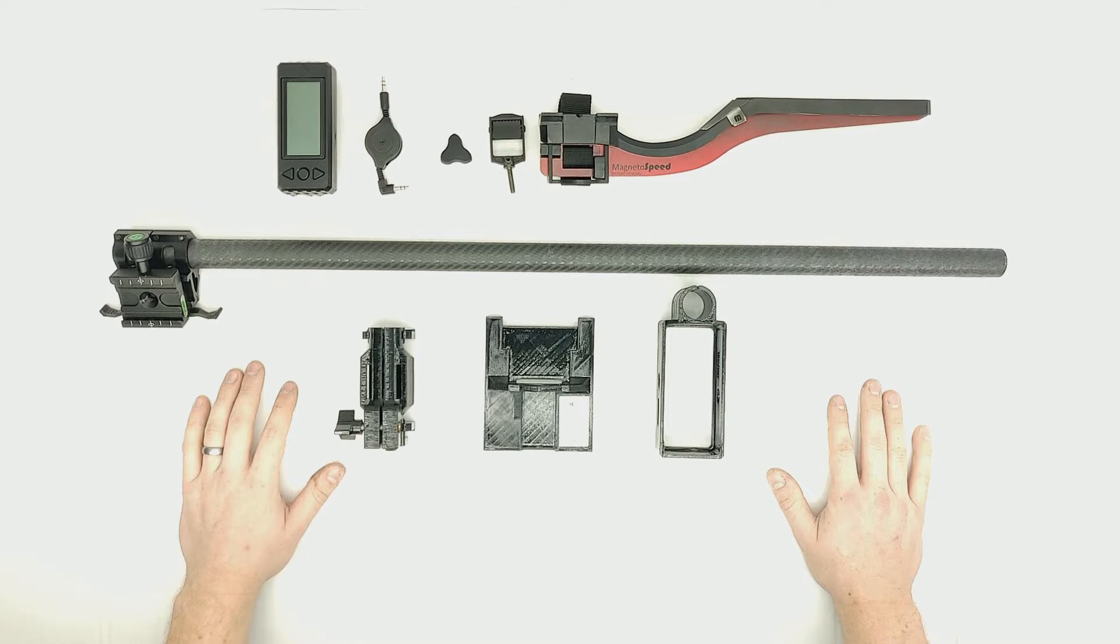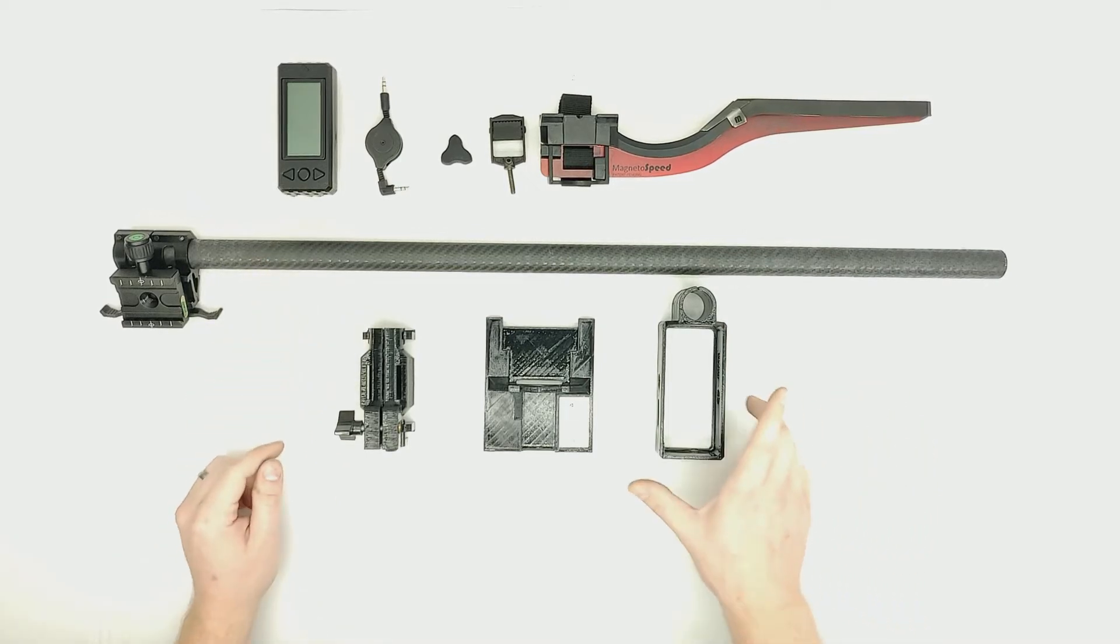Alright, let's jump into the assembly of the V3 chronomount. First thing you will want to do is get the display onto the carbon tube.